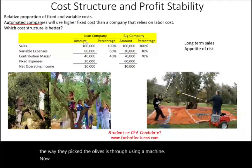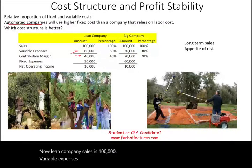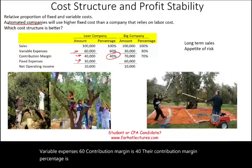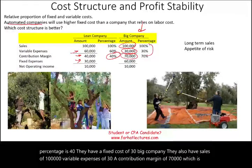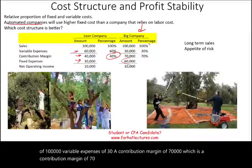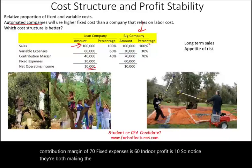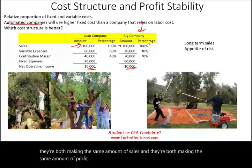Lean company sales is $100,000. Variable expenses is $60,000. Contribution margin is $40,000, which is a 40% contribution margin percentage. They have a fixed cost of $30,000. Big company also has sales of $100,000, variable expenses of $30,000, a contribution margin of $70,000 — which is 70% — and fixed expenses of $60,000. Their profit is $10,000. Notice they're both making the same amount of sales and the same amount of profit, although they have a different cost structure.